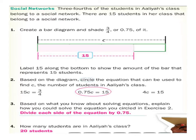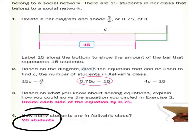There are fifteen students in the class that belong to a social network. The fifteen students is three-fourths of the class. So to find out how many students are in the class, take the fifteen students and divide it by three-fourths. You would find that there are twenty students.